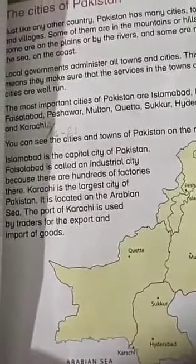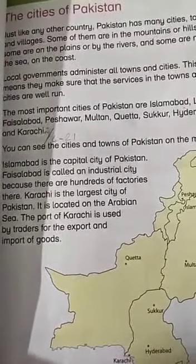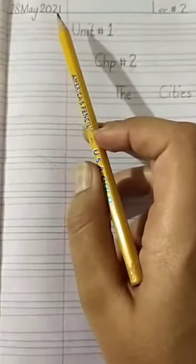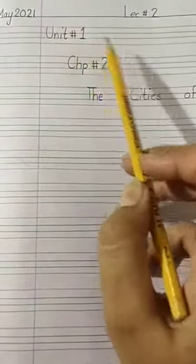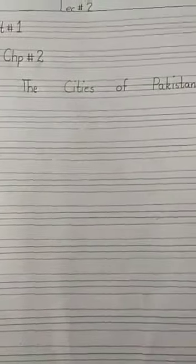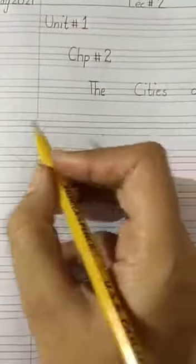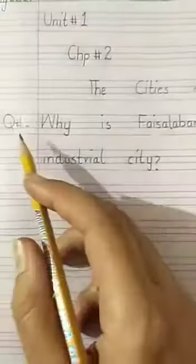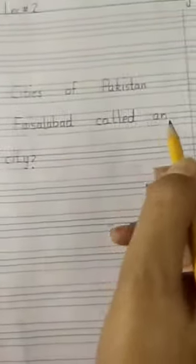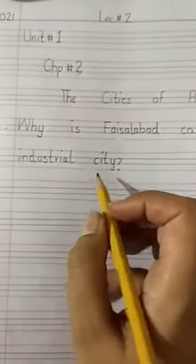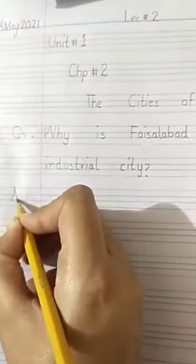Now let us solve the exercise questions. Get your copy page ready. Today's date is 28 May 2021. Lecture number 2, unit number 1, chapter number 2 — The Cities of Pakistan. Exercise question number 1: Why is Faisalabad called an industrial city? Let us write the answer, students.